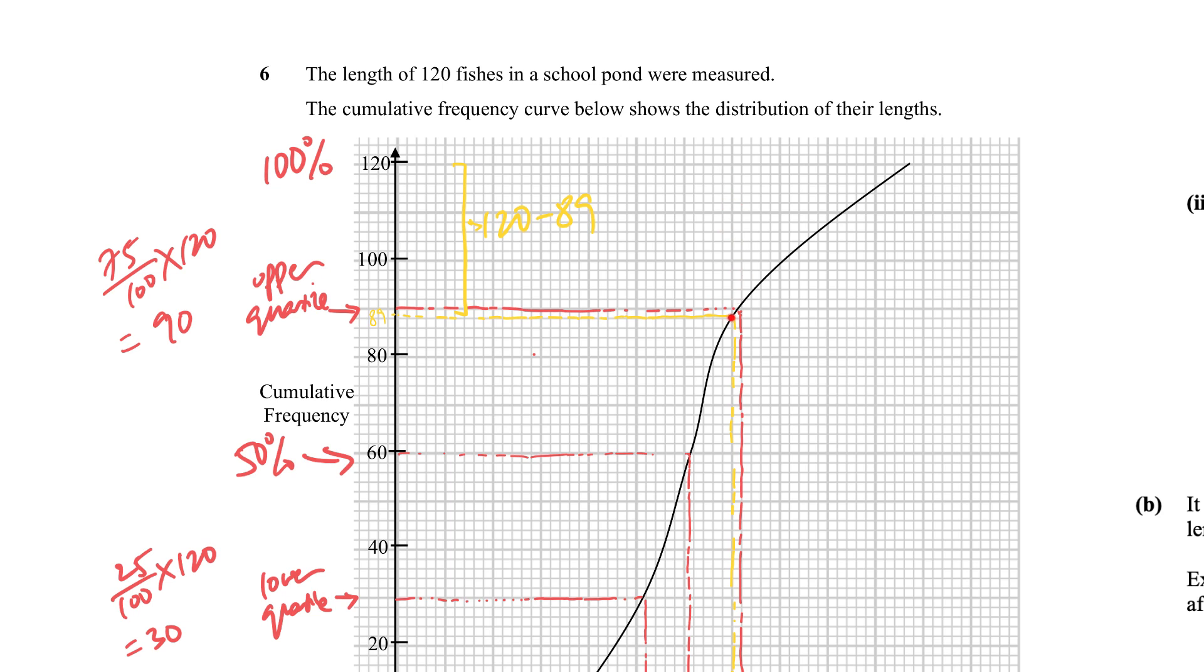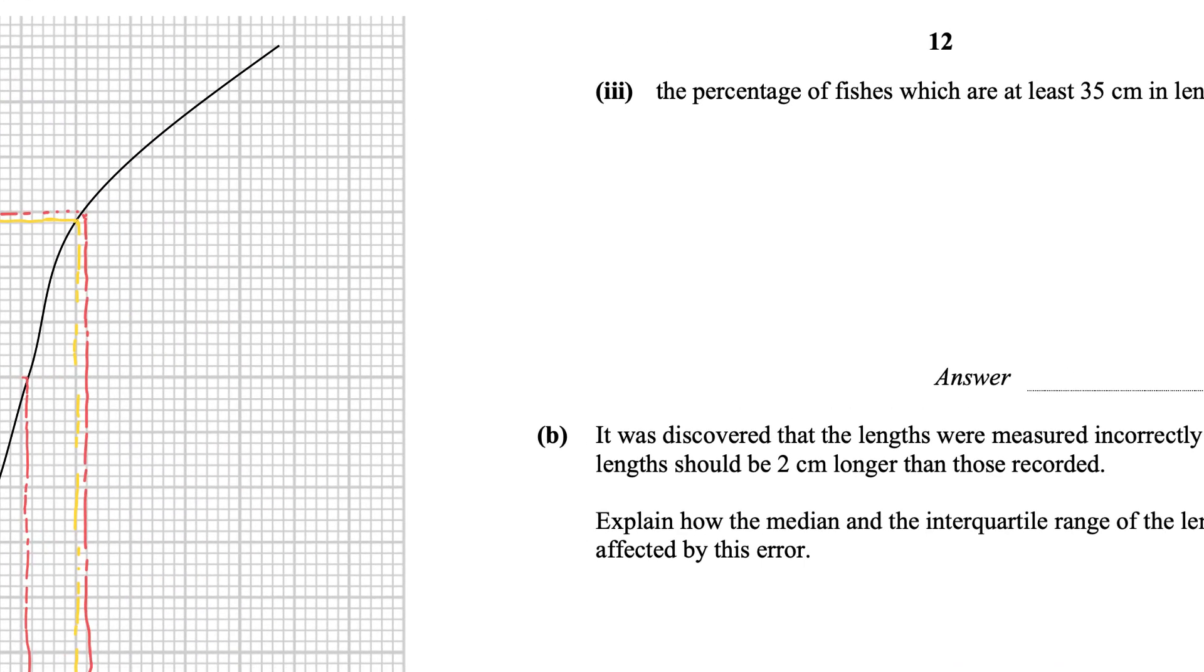That's the number of fishes that is above 35, which is represented by this whole line. And so, basically the number of fishes above 35 is this, which is 31.